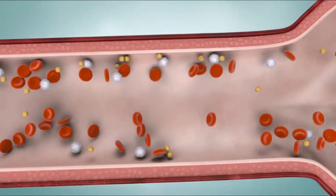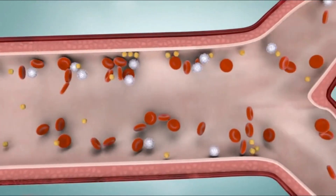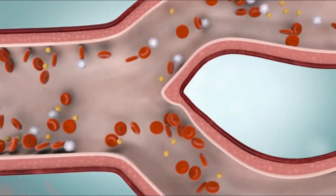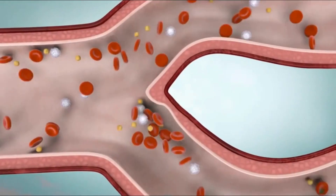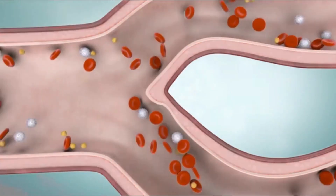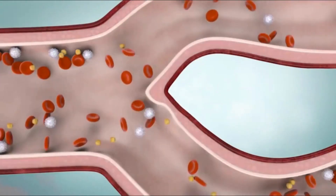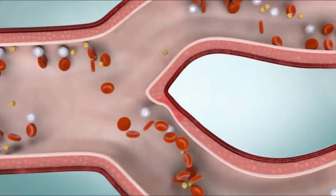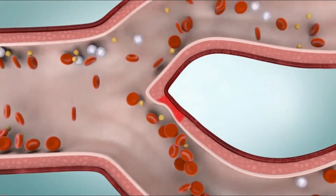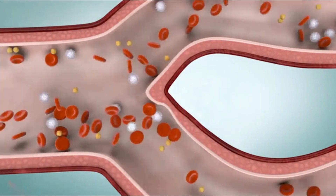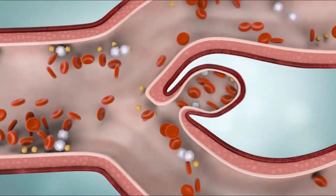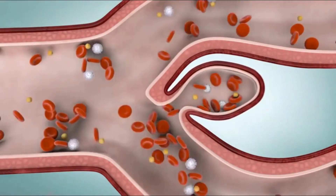The most common type of brain aneurysm tends to form at the points where the arteries branch. A normal artery wall is made up of three layers of tissue. Sometimes one of the muscular layers is damaged or missing. The force of blood, or blood pressure, against this weak spot can cause an aneurysm to form.